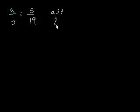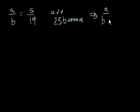Let's do another problem. Let's say that the ratio of apples to bananas in a basket is equal to 5 to 19. And when we add 23 bananas, the ratio of apples to bananas, and actually, let's just write it right now. So we now have 23 bananas more, is equal to 10 to 61.